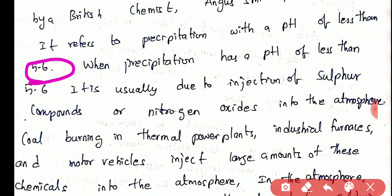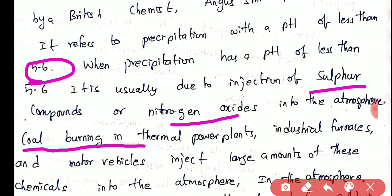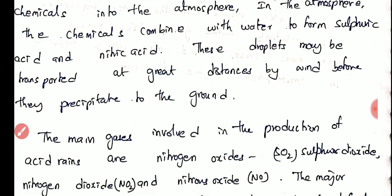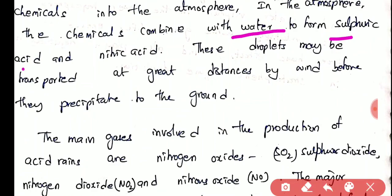When precipitation has a pH less than 5.6, it is usually due to the injection of sulfur compounds or nitrogen oxides. These sulfur and nitrogen oxides in the atmosphere combine with water or rain and reach the earth's surface as acid rain. This sulfur and nitrogen compounds are introduced into the atmosphere through fossil fuels like coal, burning thermal power plants, industrial furnaces, and motor vehicles, which inject a lot of chemicals into the atmosphere.